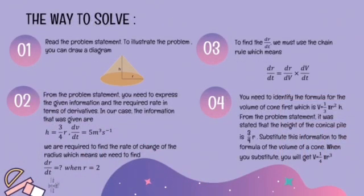The way to solve this: the first step is to read the problem statement. To illustrate the problem, you can draw a diagram. The second step is, from the problem statement, express the given information and the required rate in terms of derivatives. In our case, the information that was given includes the known rates.